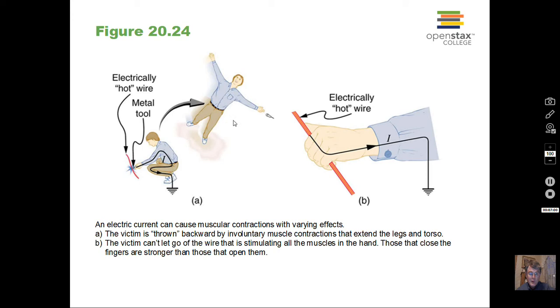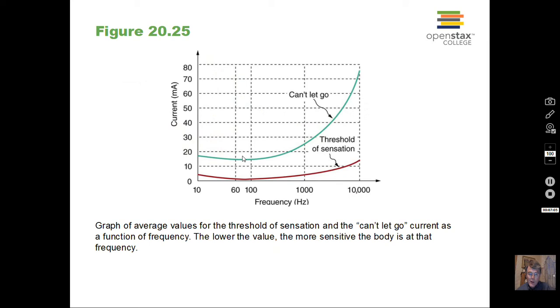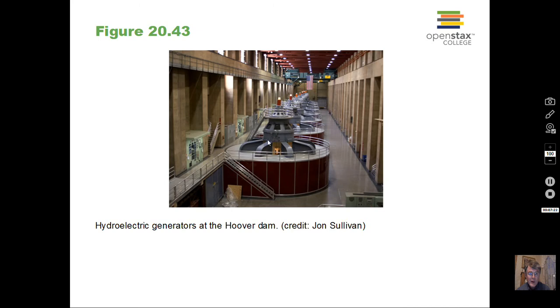Make sure the fuse box or circuit breaker box is set to deactivate the circuit. A problem with electrical situations is electricity going through the muscles can lock the muscles in place, and that current continues to go through the body.